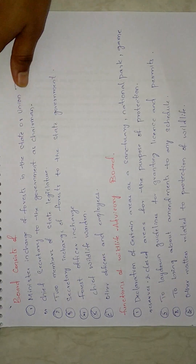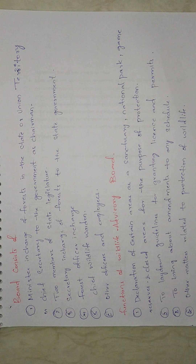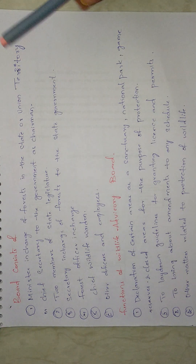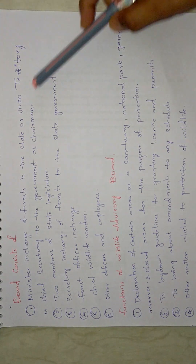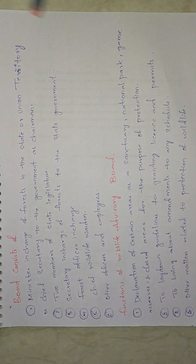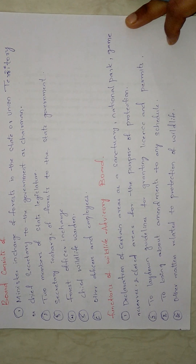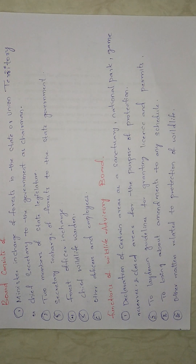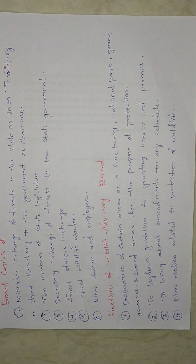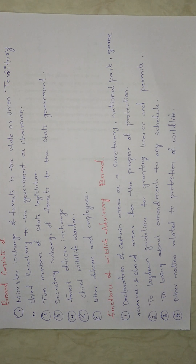A main provision of the Wildlife Protection Act 1972 is the constitution of the Wildlife Advisory Board. This board serves each state or union territory to advise the state government. According to Section 8 of the act, the Wildlife Advisory Board advises the state government regarding the declaration of certain areas as sanctuaries, national parks, game reserves, or closed areas for protection, conservation, and development of wildlife, and to bring about any amendments to any schedule.